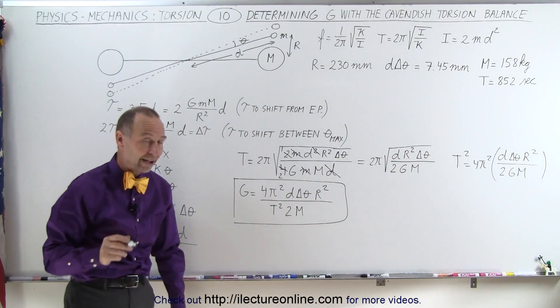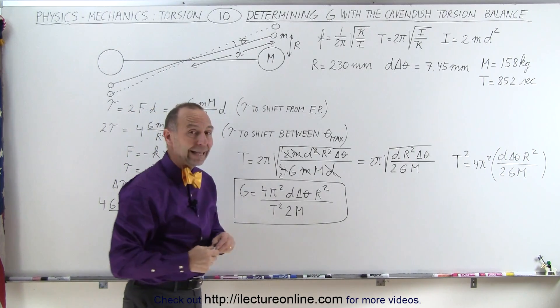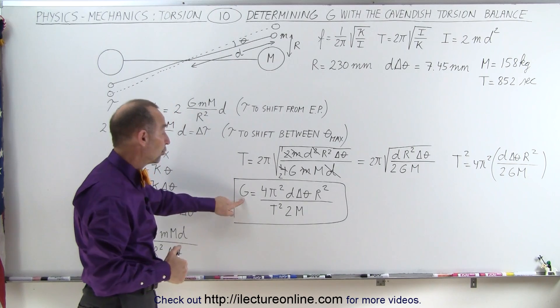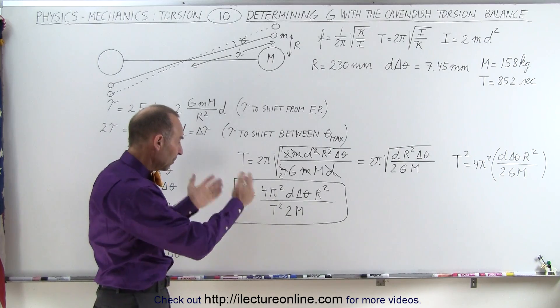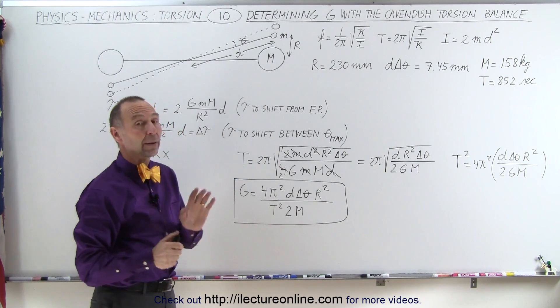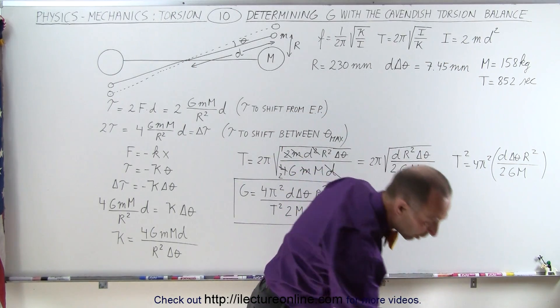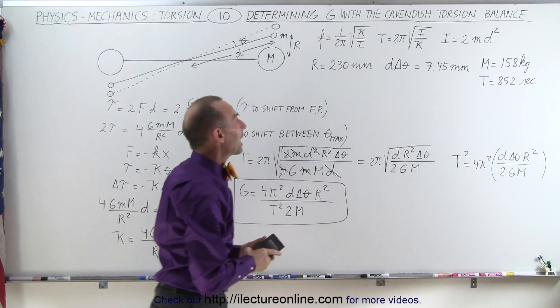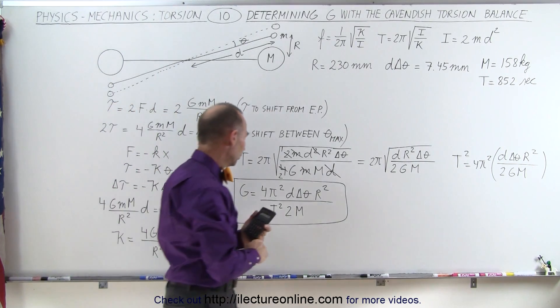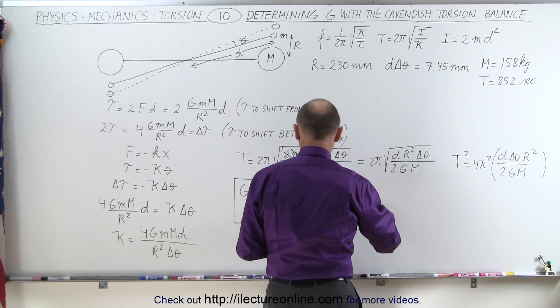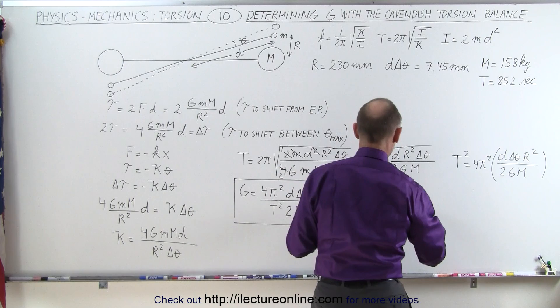And that is what he was after. Of course, he wasn't actually after G. What he eventually wanted to know was the mass and the density of the Earth, which he was able to do once he knew this constant. But let's go ahead and try to calculate this constant from his experiment. Now, I know that some of you may say, well, all these numbers are not quite what you see when you look at references. There are some discrepancies in what the actual numbers were, but let's go ahead and plug in what we have here.